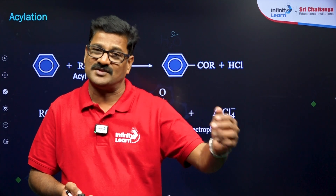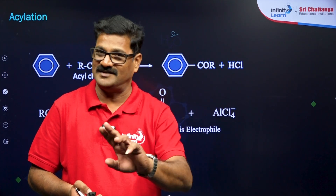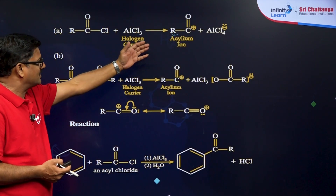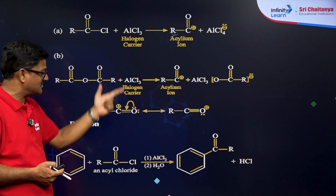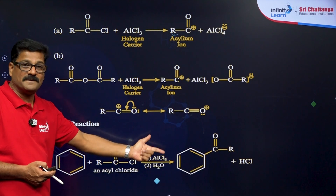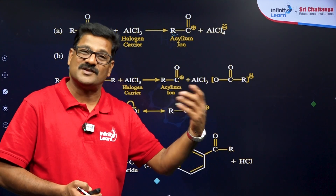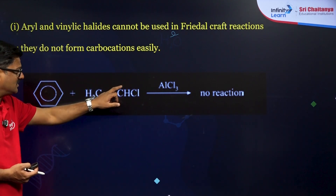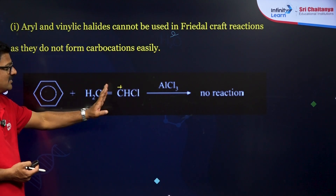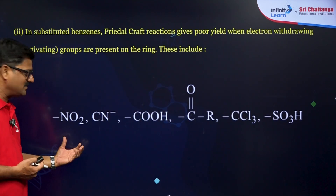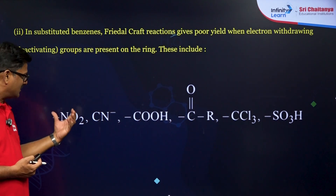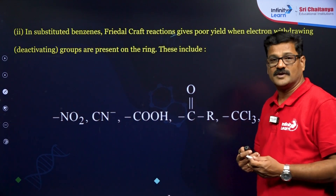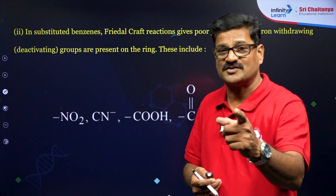Friedel-Craft acylation is preferred because Friedel-Craft alkylation gives polyalkylation, whereas acylation does not give polyacylation. Also, the acylium ion does not rearrange — it is stabilized by resonance — so you get acyl benzene. For example, acyl chloride gives acetophenone, and benzyl chloride gives benzophenone. Vinyl chloride gives no reaction because the carbocation is not stable. Also, when benzene has substituents like cyano, nitro, carboxylic, trichloro, or sulfonic groups, Friedel-Craft reaction does not take place because these groups strongly deactivate the benzene ring.